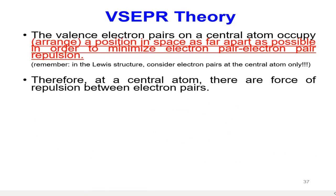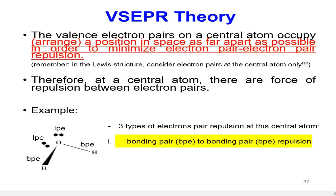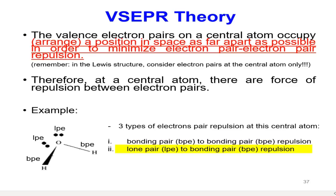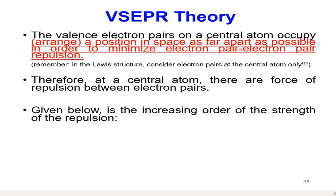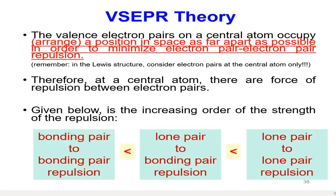There are three types of electron pair repulsion. The first one is bonding pair to bonding pair repulsion. The second one is lone pair to bonding pair repulsion. And the third one is lone pair to lone pair repulsion. These three types have different strengths — lone pair to lone pair repulsion has the greatest force of repulsion, compared to lone pair to bonding pair repulsion and bonding pair to bonding pair repulsion.